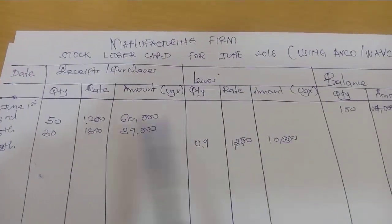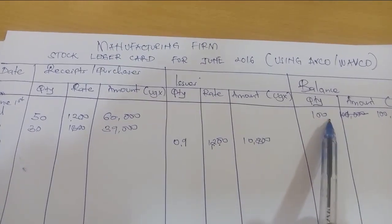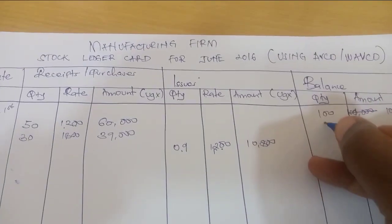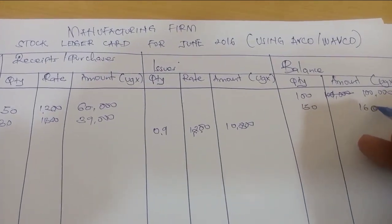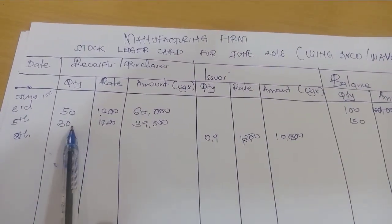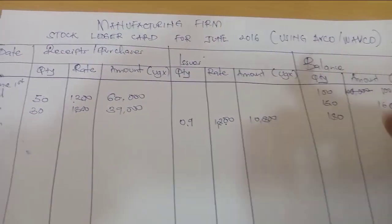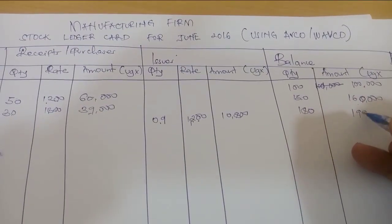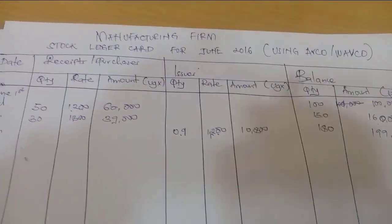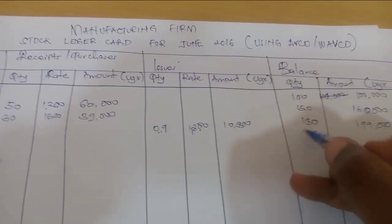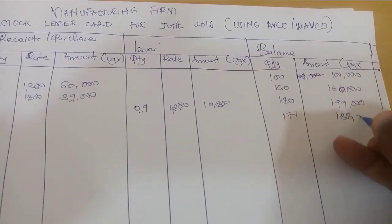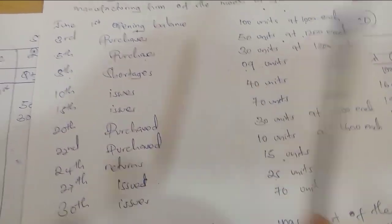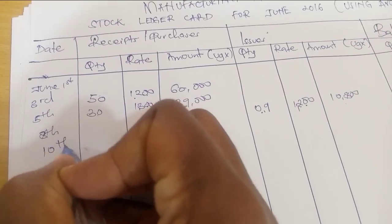After every receipt or issue, you write the balance. For purchases you add: 100 plus 50 gives a quantity balance of 150, and 100,000 plus 60,000 gives 160,000. Then adding the 5th purchase: 150 plus 30 gives 180 units, and 160,000 plus 39,000 gives 199,000. For the shortage issue, we subtract: 180 minus 9 gives 171 units, and 199,000 minus 10,800 gives 188,200.